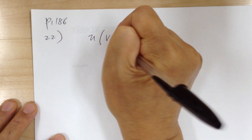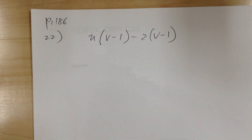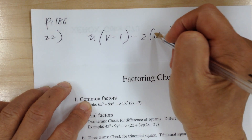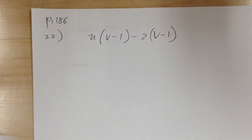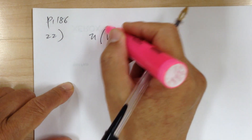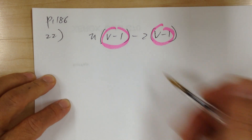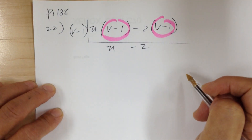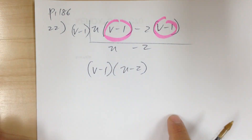Next: u(v - 1) - 2(v - 1). Go through each step. Step 1, common factor: notice (v - 1) appears in both terms — that's the common factor. Factor it out: (v - 1)(u - 2). You can check: (v - 1) times u gives u(v-1), and (v - 1) times -2 gives -2(v-1). So your answer is (v - 1)(u - 2).